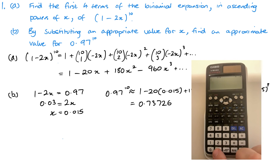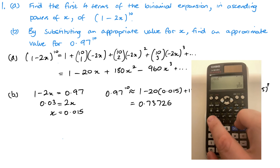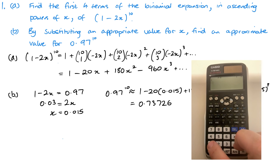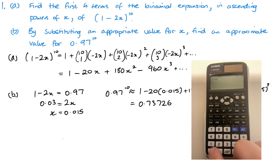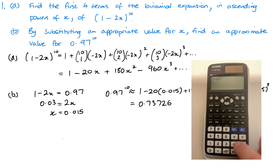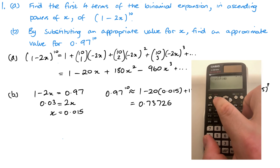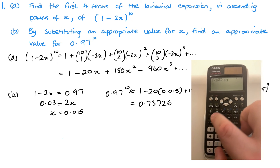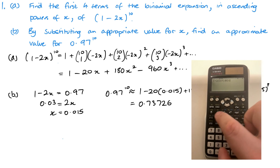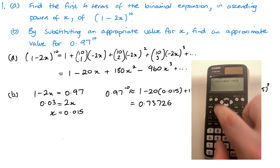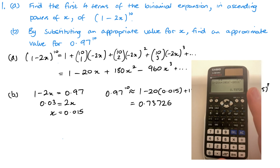If you want to do this on your calculator easily, put your x value in — for example 0.015 — press equals, then store it as a letter; I've stored it as 'a'. Then just enter the expansion: 1 − 20a + 180a² − 960a³, and there's your answer.